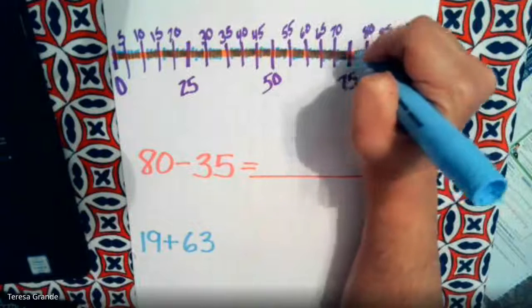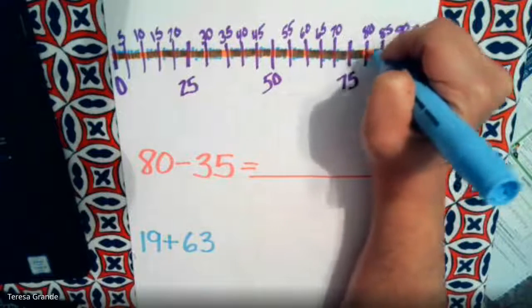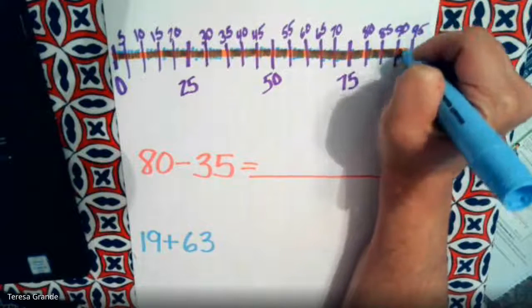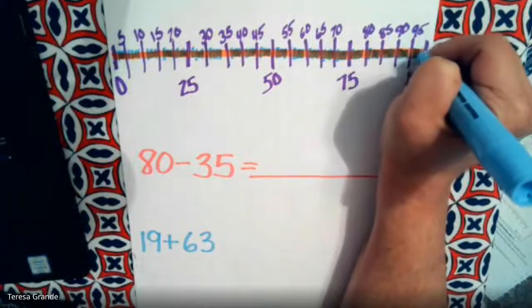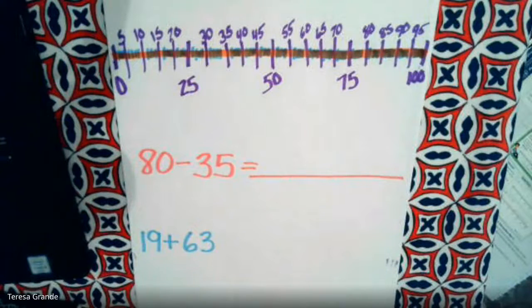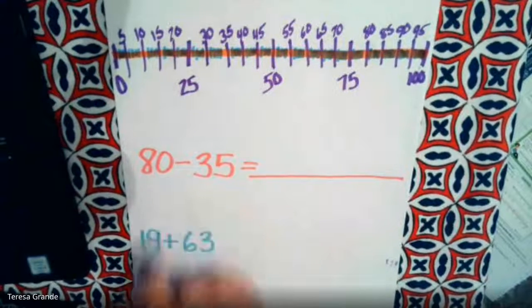And with this one, we're going to actually do two problems on this number line and we're going to do them in different colors. So those are our hash marks.